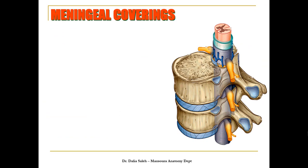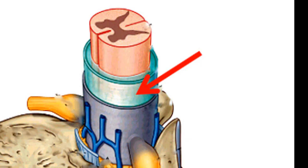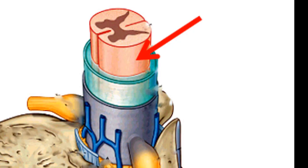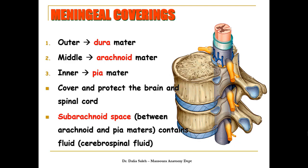We can see the meningeal coverings in this diagram. The outer layer is formed by the dura mater, the middle layer by the arachnoid mater, and the innermost layer — which is adherent to the spinal cord — is formed by the pia mater. These layers of the meninges cover and protect both the brain and the spinal cord. The space between the arachnoid mater and the pia mater is called the subarachnoid space, which contains the cerebrospinal fluid.